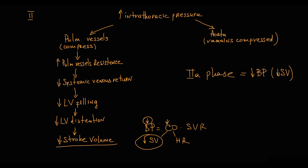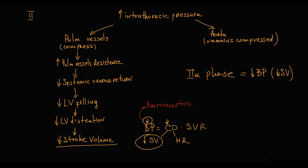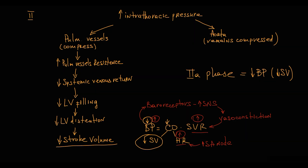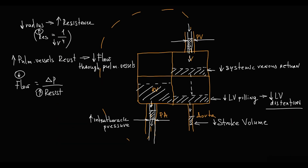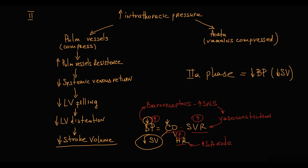The fall in blood pressure is sensed by baroreceptors, which react by stimulating the sympathetic nervous system, causing vasoconstriction and increasing systemic vascular resistance, and also stimulating the sinoatrial node to increase heart rate. This compensatory response increases blood pressure through higher heart rate and systemic vascular resistance. However, cardiac output remains low because pulmonary vessels are still compressed, so left ventricular filling and stroke volume remain low. This is Phase 2B, characterized by a reflex increase in heart rate and blood pressure.